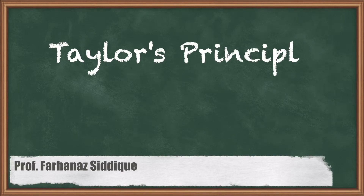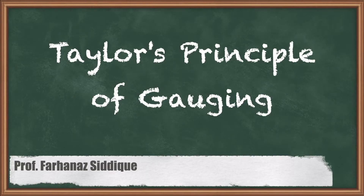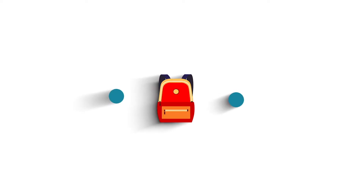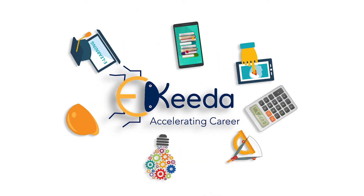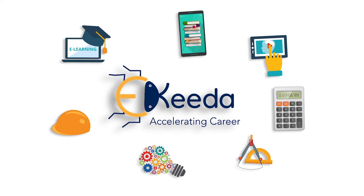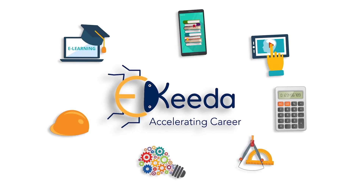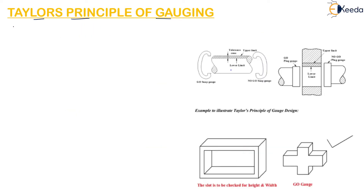Hello students, today let us learn about Taylor's principle of gauging. According to Taylor, go and no-go gauges should be designed to check maximum and minimum material limits.